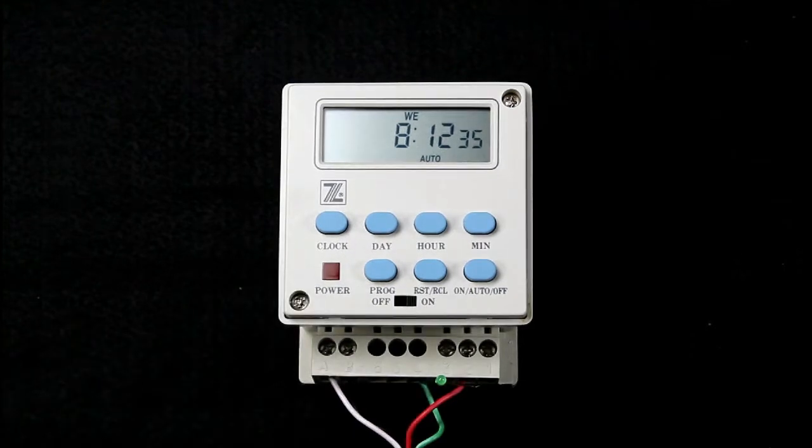Next, we'll go over the on, auto, off function. On the display here, the relay is in auto. The button labeled on, auto, off changes the state of the relay.